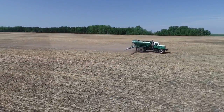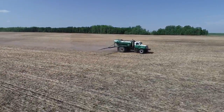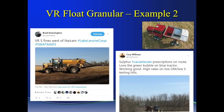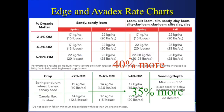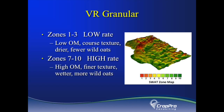Floaters are a very common piece of equipment that we work with for blind variable rate fertilizer, but they often have multiple bins and some of those smaller bins could be used to variable rate apply granular products. An obvious opportunity to do variable rate granular products is with Edge and Avidex, which have use rates based on organic matter and soil texture. In zones one to three — areas with low organic matter and coarse texture — these are typically drier and would have fewer wild oats, whereas the green zones seven to ten would require higher rates due to having higher organic matter, finer texture, being wetter, and having more wild oats.